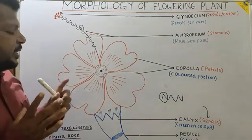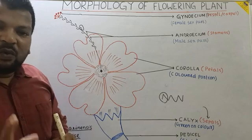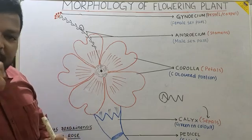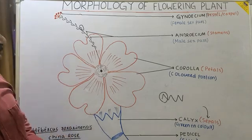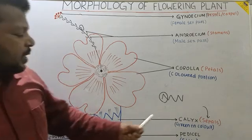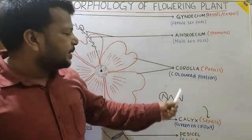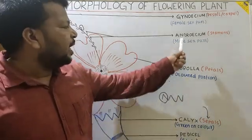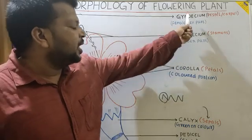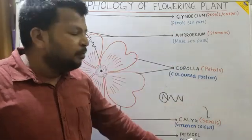A typical flower has the following parts: Calyx, Corolla, Androecium, and Gynoecium. The pedicel is not a necessary part of the flower.